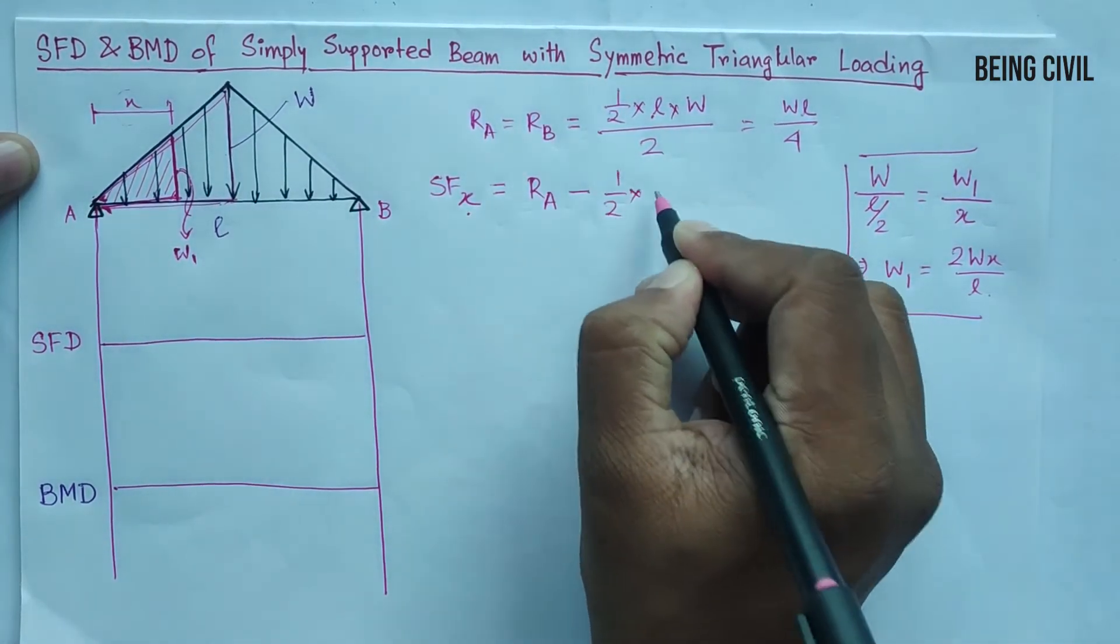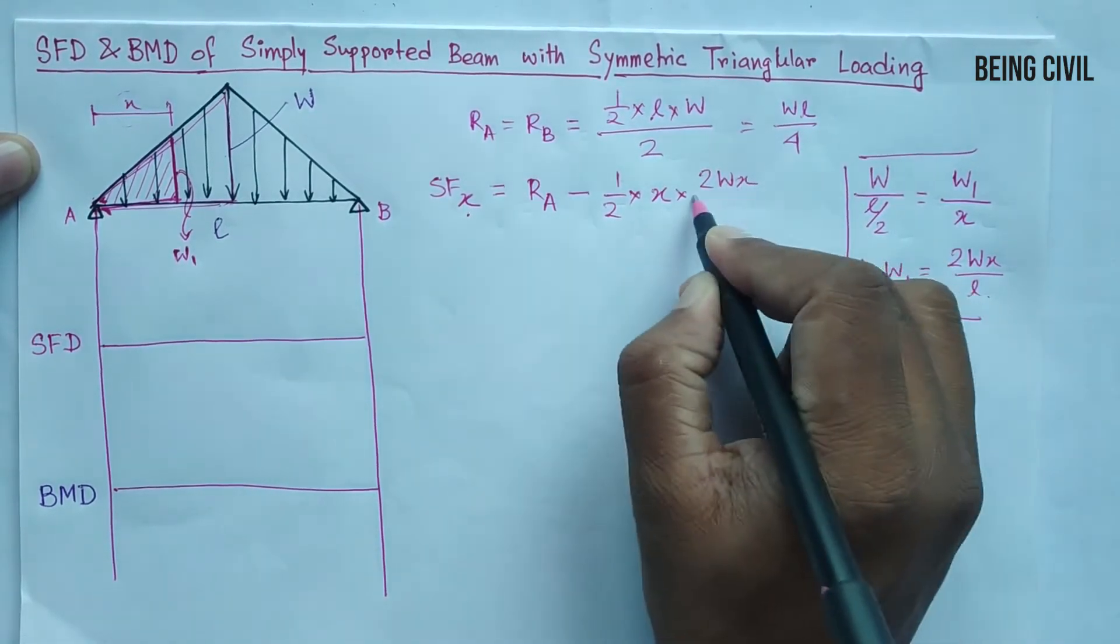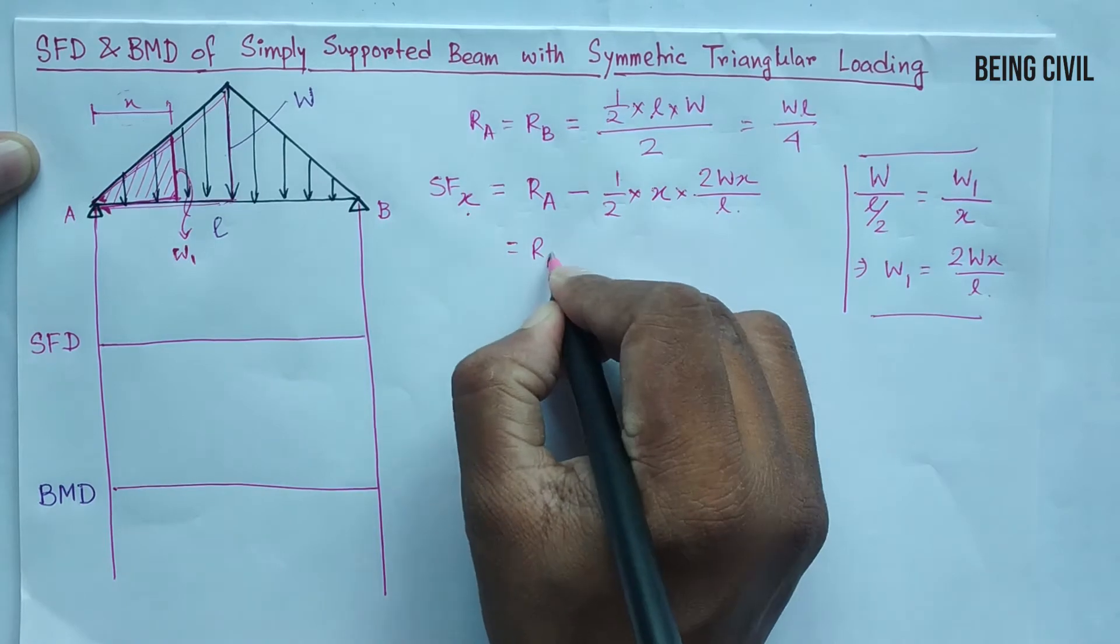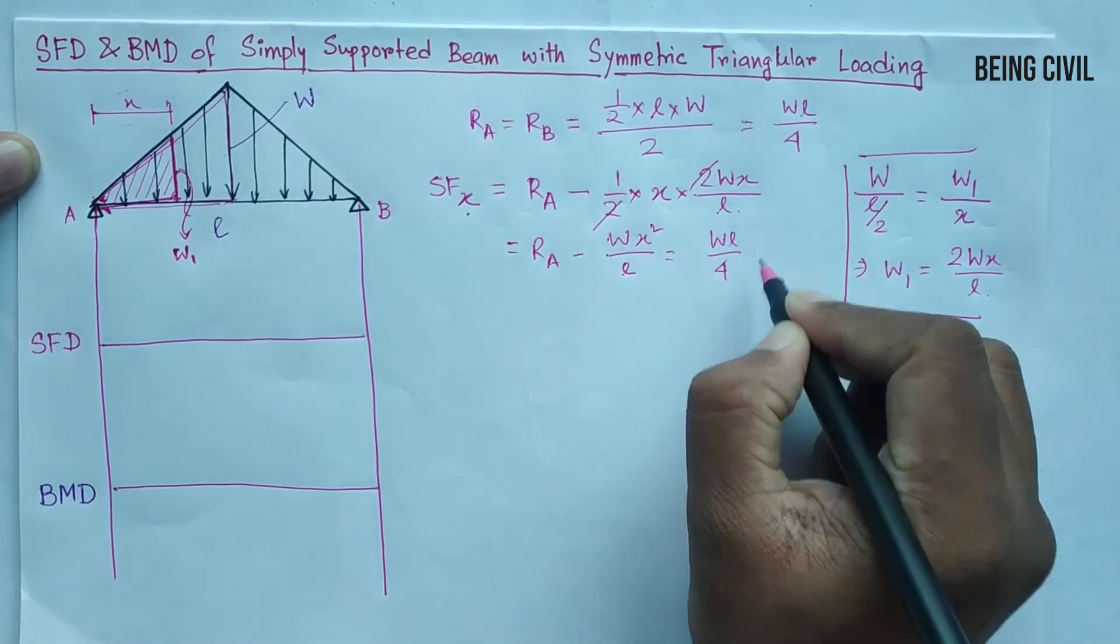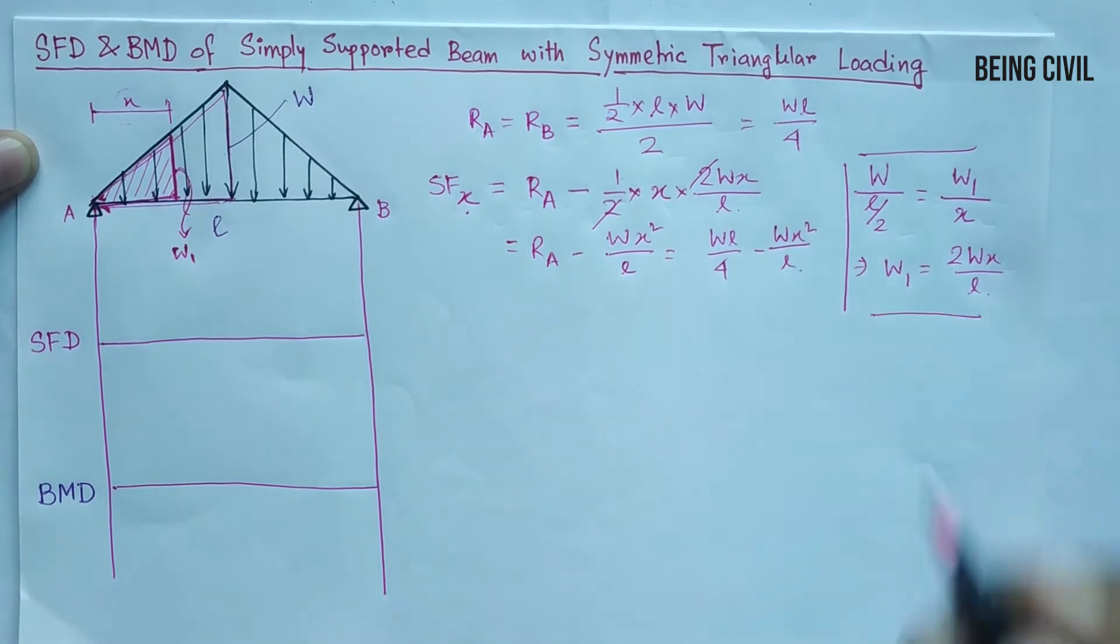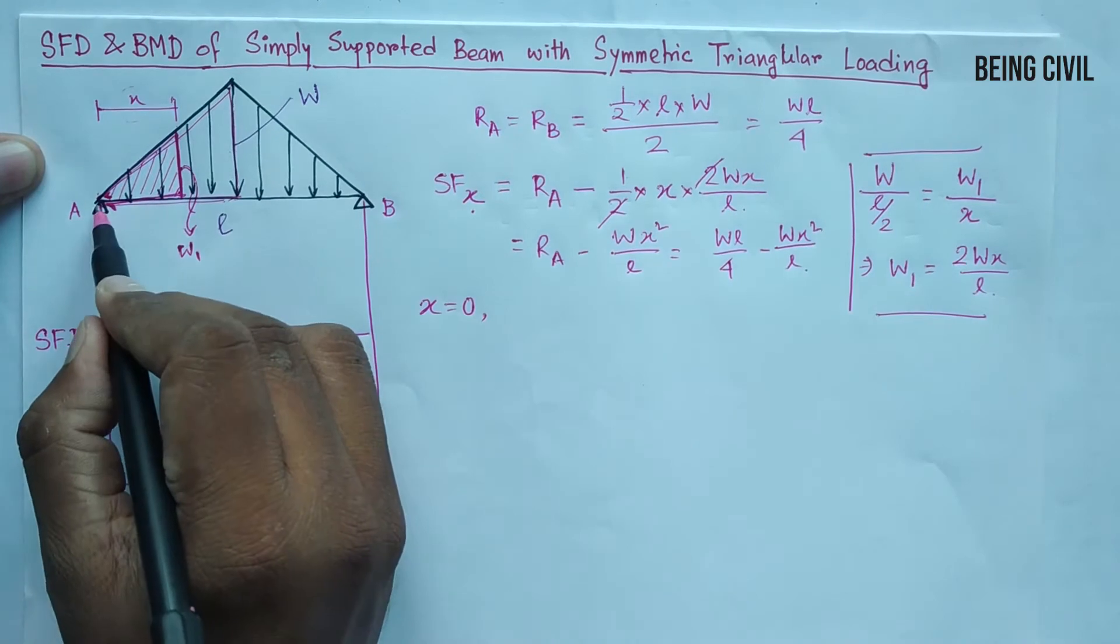So W1 equals 2Wx by L. The downward force is half into base is x and the height is 2Wx by L. So SF equals WL by 4 minus Wx squared by L. So this is the equation of the shear force.